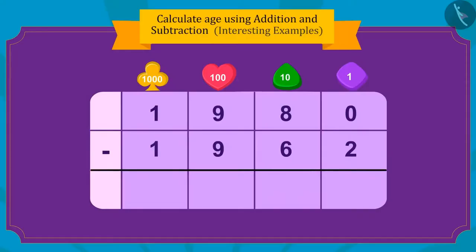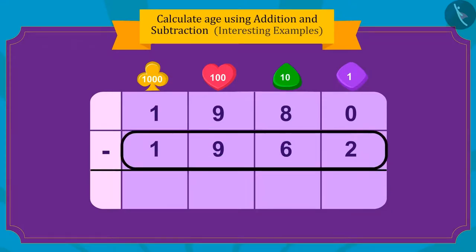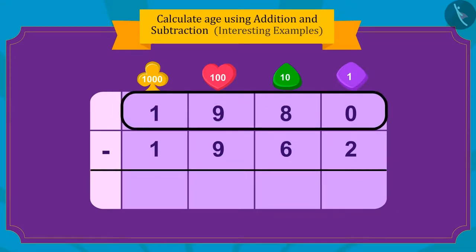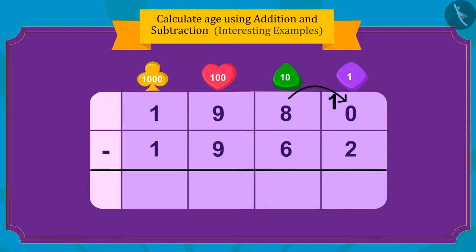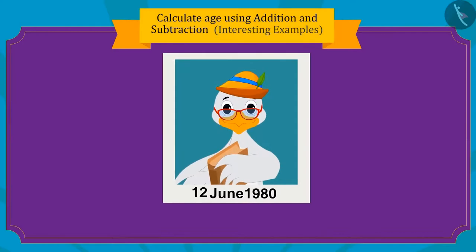Yes! If we subtract 1962 from 1980, then we can find the age of Uncle in this picture. Uncle's age in this picture is 18 years.